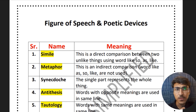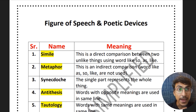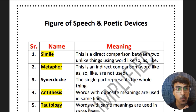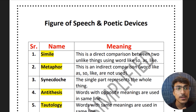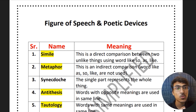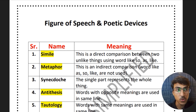Let's start with the first one — simile. Simile is the direct comparison between two unlike things using the words 'like', 'so', 'as', or 'like'. Then metaphor — it's an indirect comparison, so the words like 'so', 'like', and 'as' are not used. Remember — not used.